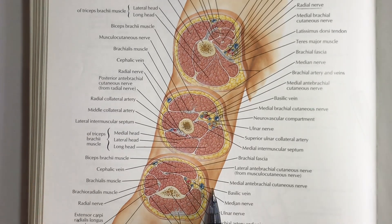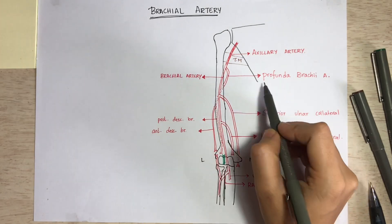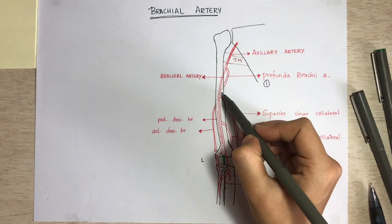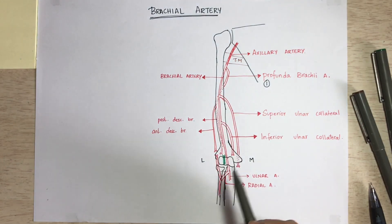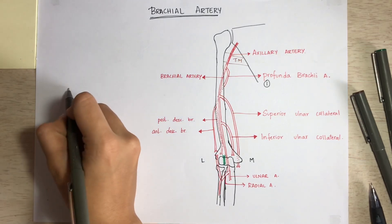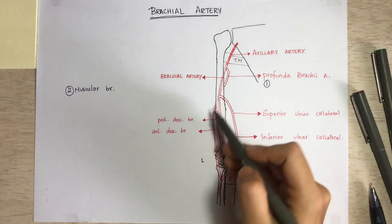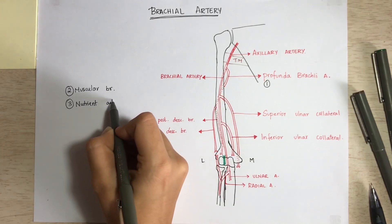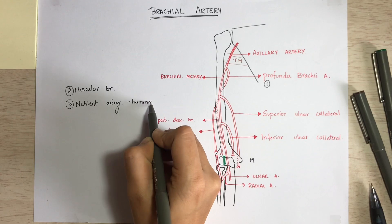The branches of the brachial artery: the first, most important, and largest branch is the profunda brachii artery, given off just below the teres major muscle. It accompanies the radial nerve in the radial groove, going behind the humerus. Next are unnamed muscular branches supplying the regional muscles, and then the nutrient artery to the humerus.